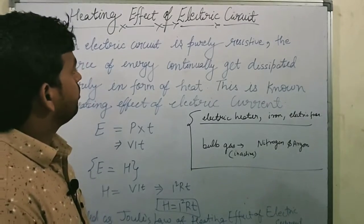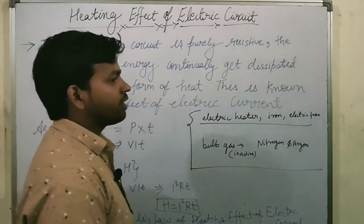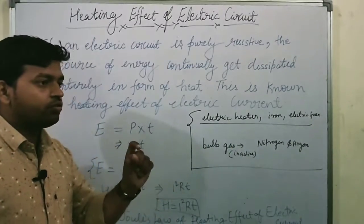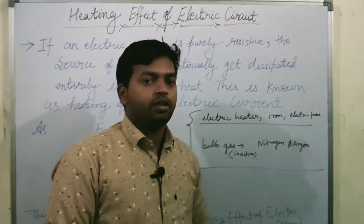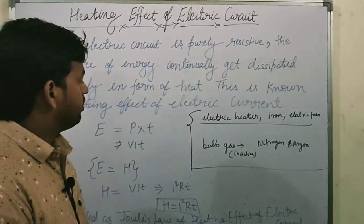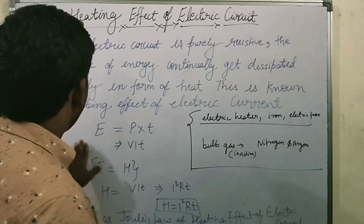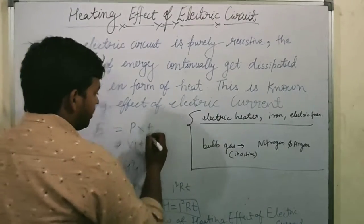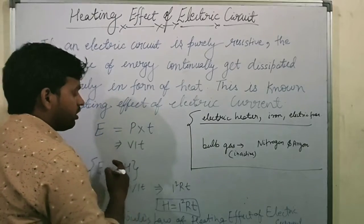That means, what happens in the circuit when electricity is consumed, what happens in the form of heat? That is the heating effect of electric current. So we can write E equal to P into T, where P is power, T is time, and E is electric energy.